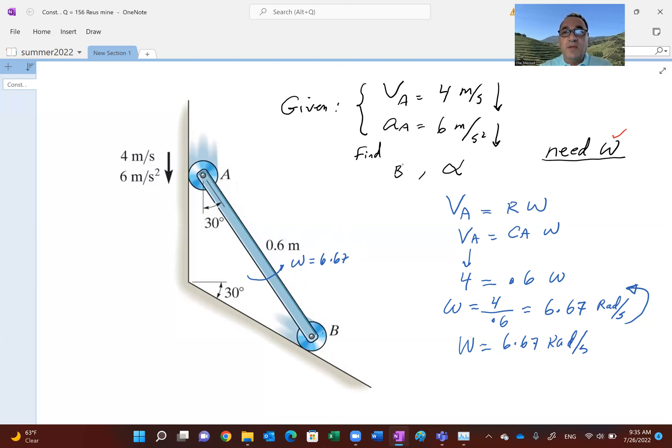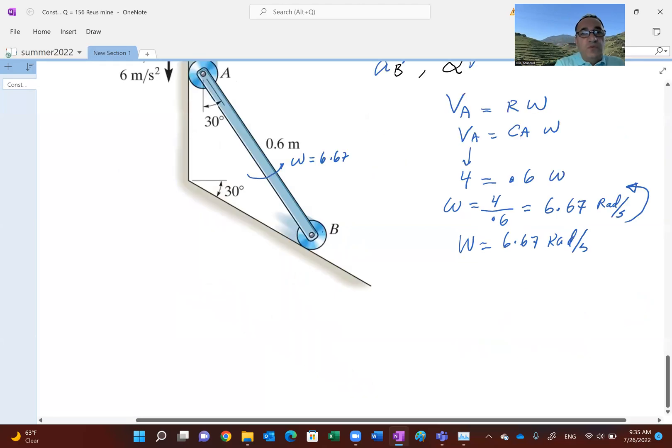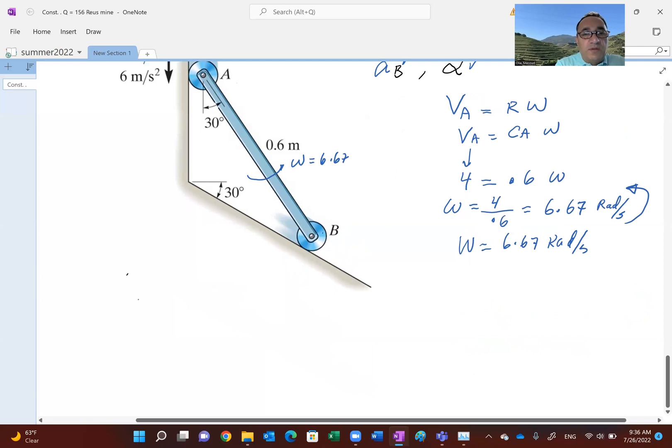All right. Now, how do we go about finding acceleration of B? Sorry, this was acceleration of B and alpha of the body. All right. So the way we do that, let me just go back to black here, I guess. Okay. So you start with writing the relative motion equation. You say acceleration of B, let's translate with A. I know what acceleration of A is. It's 6 meters per second squared down, plus acceleration of B relative to A.